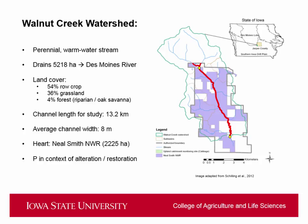Our study takes place in the Walnut Creek watershed — it's a really exciting place to work. It's in Jasper County, Iowa, just east of Des Moines, on the southern Iowa drift plain. Walnut Creek is a perennial warm-water stream, about 5,200 hectares, that dumps into the Des Moines River. Land cover is 54% row crop, 36% grassland, and 4% forest, riparian, and restored oak savannah.